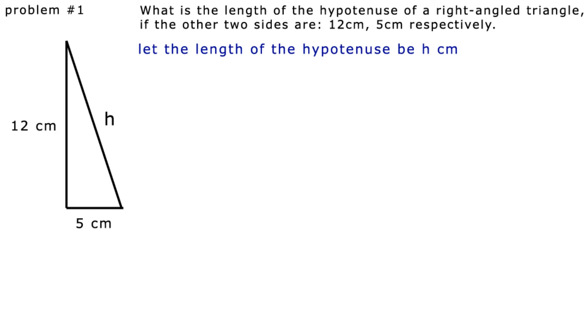Using Pythagoras' theorem, we get 5 squared plus 12 squared equals h squared, which gives 25 plus 144 equals h squared. Adding the 25 and 144, we have 169 equals h squared.